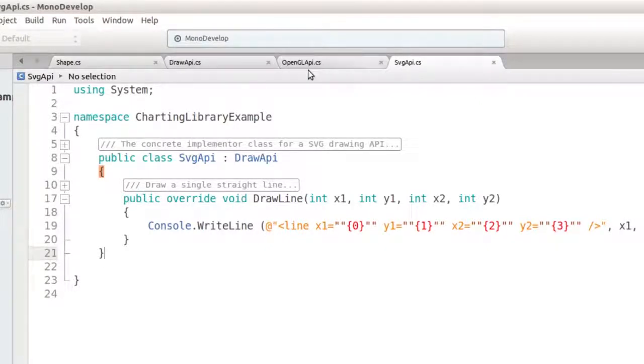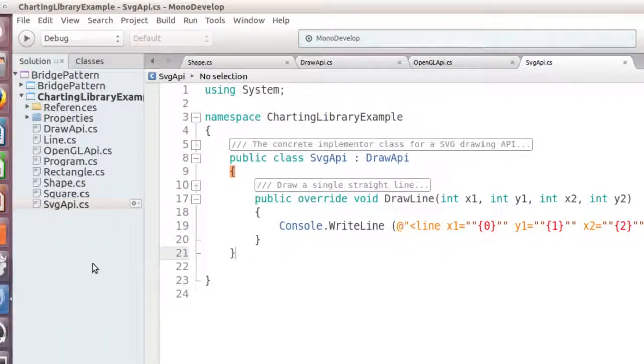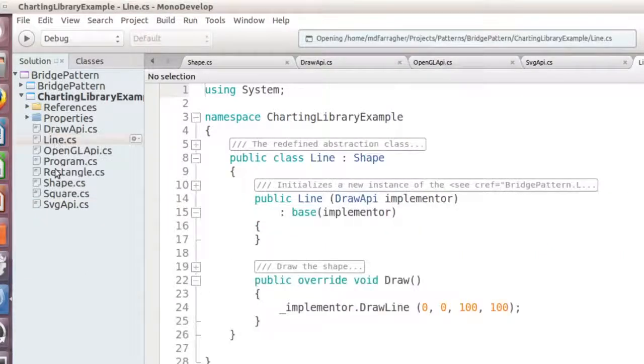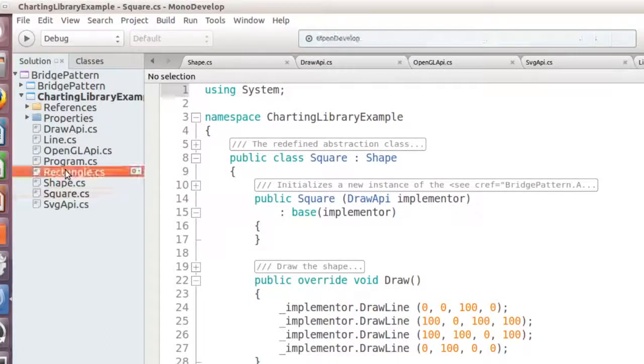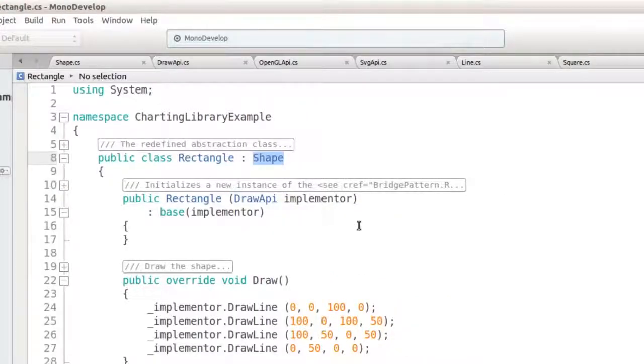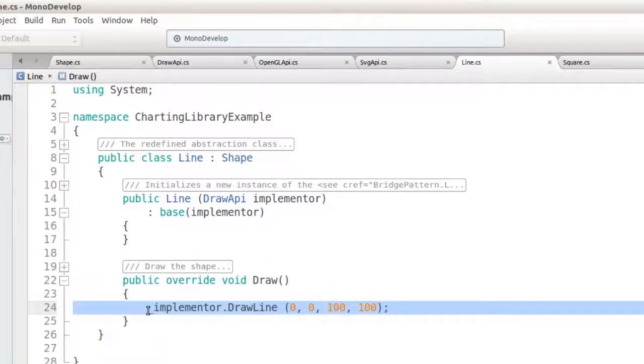Now let's look at the concrete shape classes: Line, Square and Rectangle. Each class inherits from shape and implements the draw method. You can see in the line class that the implementation simply uses the draw API instance to draw a single line.